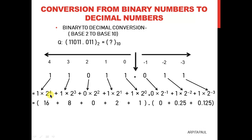Now from the power of 2 table we get the values: 2 to the power 4 is 16, so 16 into 1 is 16. Plus 2 to the power 3 is 8, so 8 into 1 is 8. Plus 2 to the power 2 is 4, and 0 into 4 is 0 — anything multiplied by 0 becomes 0. Plus 2 to the power 1 is 2, so 1 into 2 is 2. Plus 2 to the power 0 is 1, so 1 into 1 is 1. For the right hand side: 0 into something is 0. Plus 2 to the power minus 2 is 0.25, so 1 into 0.25 is 0.25. Plus 2 to the power minus 3 is 0.125, so 1 into 0.125 is 0.125.